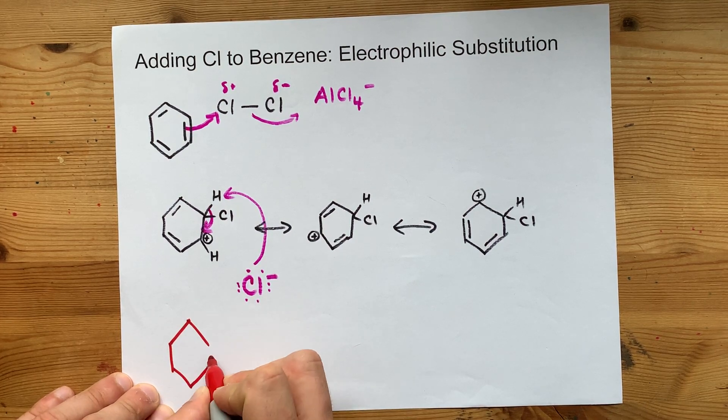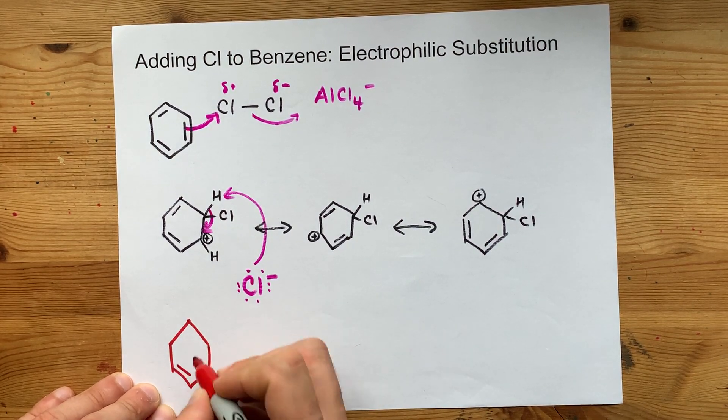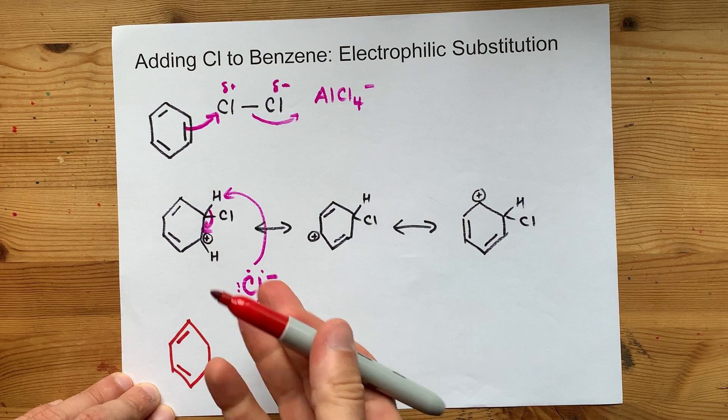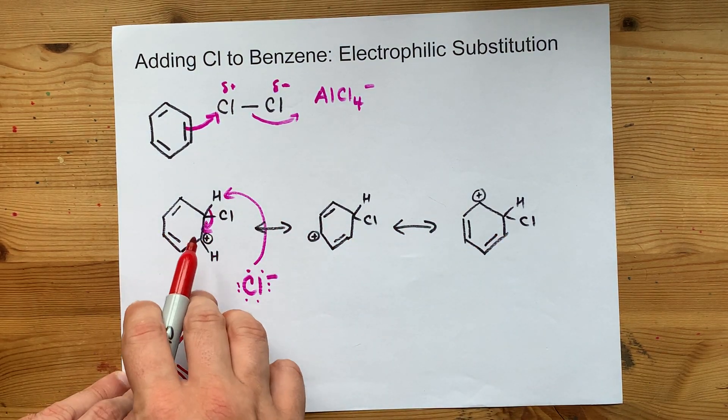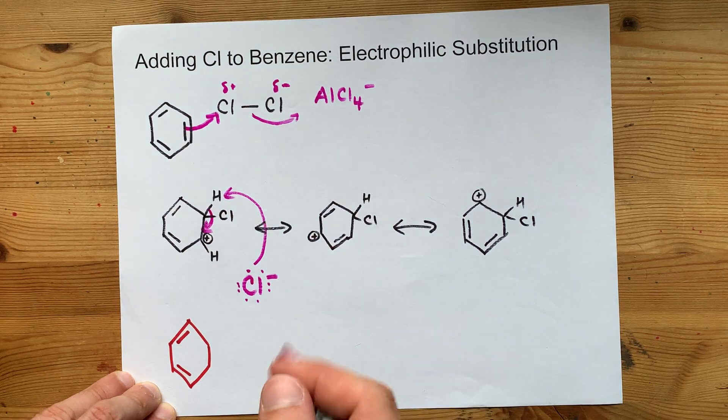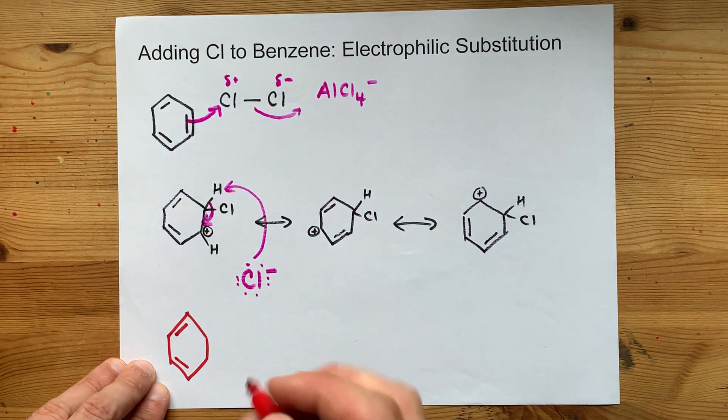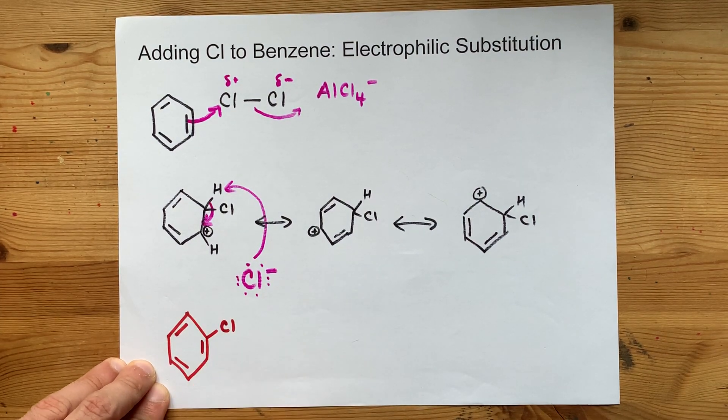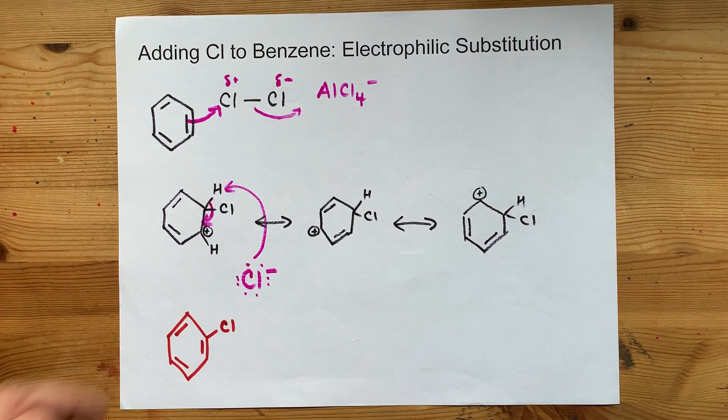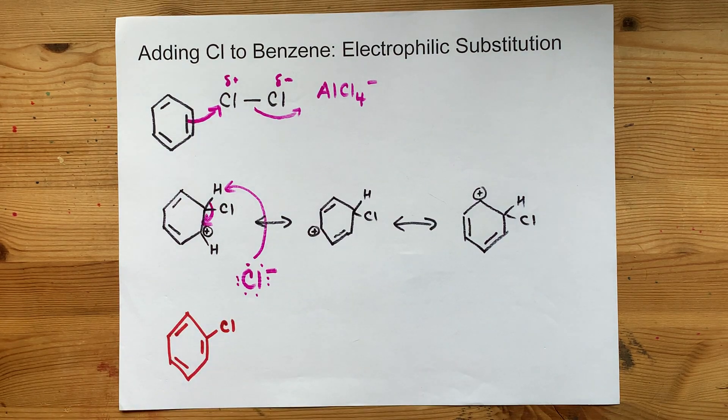So your final product here is the six-membered ring. These two double bonds are untouched, although they did contribute to delocalizing and stabilizing that positive carbocation intermediate. You have a chlorine attached here, a double bond between them, and a hydrogen here, which I will not show because no one ever does.